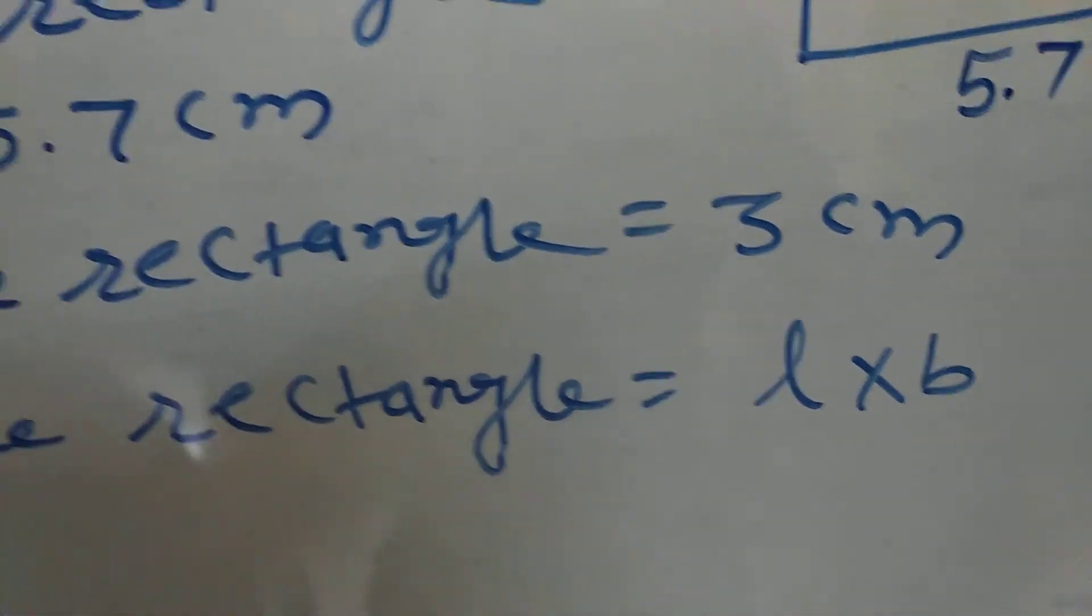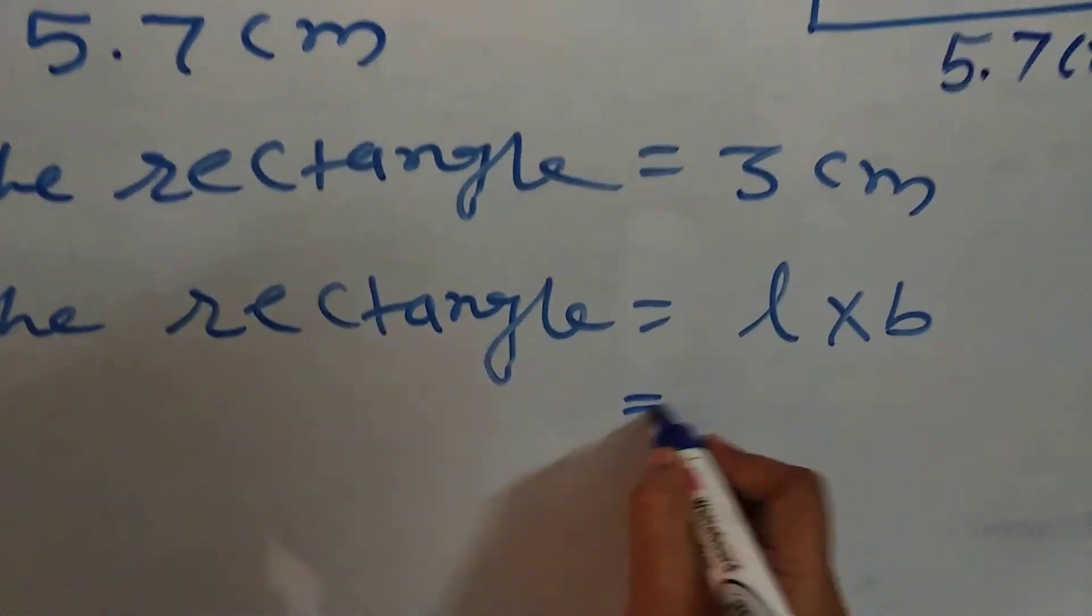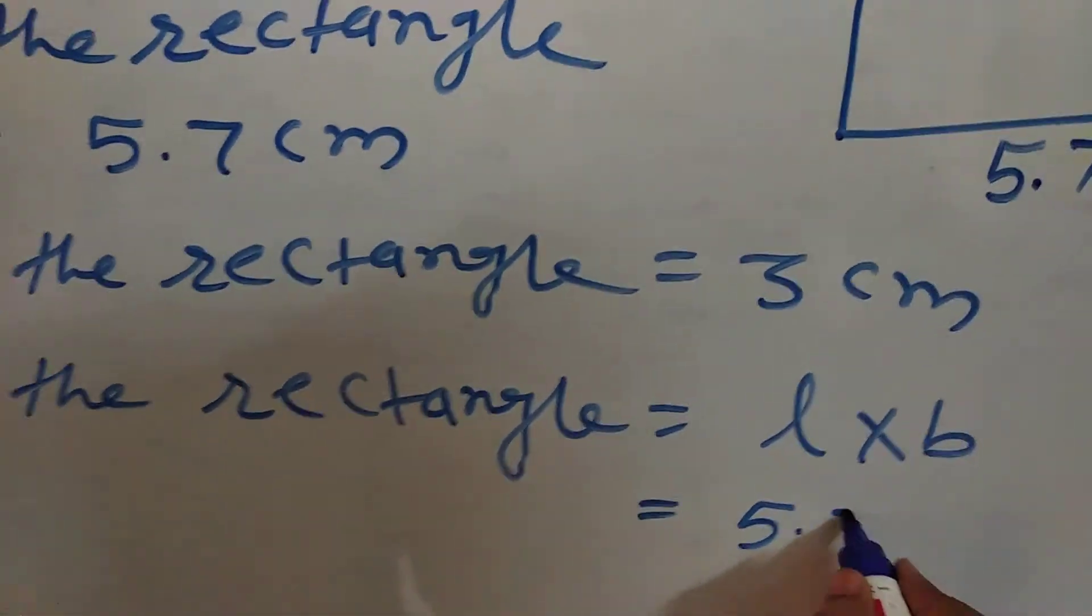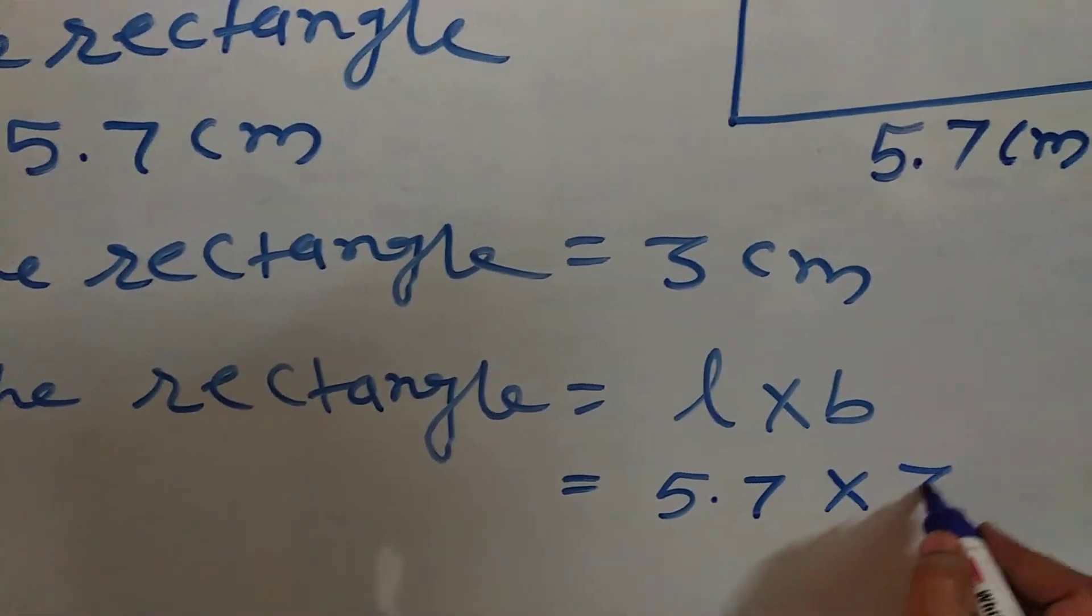So, you can write short length L into B. Here, length is 5.7 cm and breadth is 3 cm.